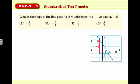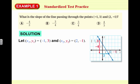What is the slope of the line passing through the points negative 1, 3 and 2, negative 1? We even have them plotted on a little graph. Let's let x1, y1 be negative 1, 3 — so x1 is negative 1 and y1 is 3 — and x2, y2 be the point 2, negative 1, so x2 is 2 and y2 is negative 1.